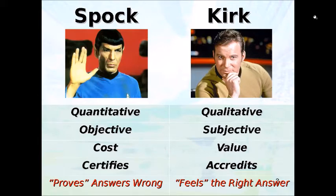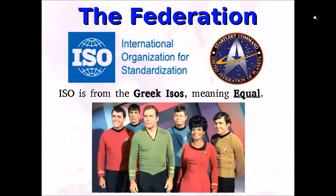Kirk is letting Spock take the test first, watching the clock and thinking about the answers. He says, 'Spock, where are we on question 25?' 'Captain, I'm certain it's not A and it's not B.' Then Kirk has to subjectively pick an answer. The ISO is like the Federation, if you're a Star Trek fan. ISO comes from the Greek and it means equal — no matter where you come from in this world, we need to treat each other as equals, especially when we share the internet. Many of our internet standards come from the ISO.